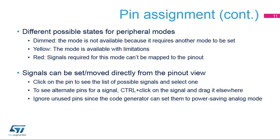There are different possible states for peripheral modes. Dimmed state: the mode is not available because it requires another mode to be set. Place the mouse pointer over the dimmed mode to see the reason. It may require a disabled clock source or have other peripheral dependencies.